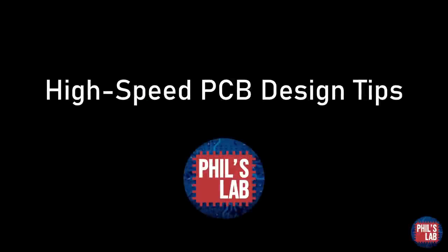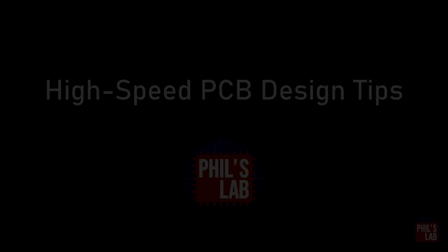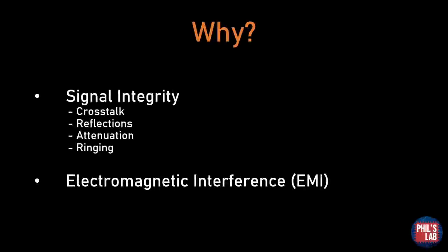In this video, I'd like to go through a few high-speed PCB design tips to help you improve your PCB routing and layout when you come across high-speed signals, for example USB 3, HDMI, and so forth. With high-speed design, we are typically worried about two things: first, signal integrity — problems such as crosstalk, reflections due to impedance mismatches, attenuation of the signal, and ringing. Additionally, we're also concerned about electromagnetic interference, or EMI for short.